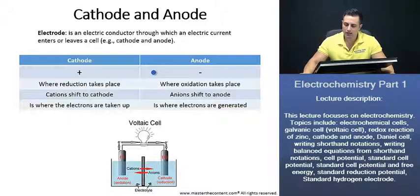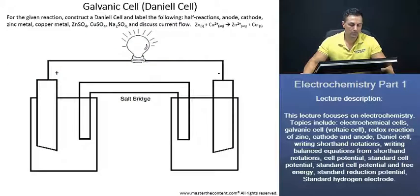Now, if we take a look at the anode, this is where it's given a negative sign, as we see here. Furthermore, this is where oxidation takes place. Anions shift to the anode. We see the anions shifting towards our anode. And this is where electrons are generated. We see here, our electrons are being generated at our anode. Now, let's actually do an example.